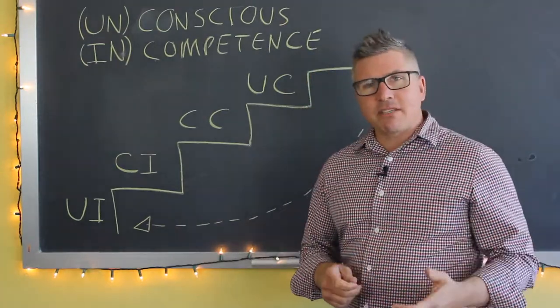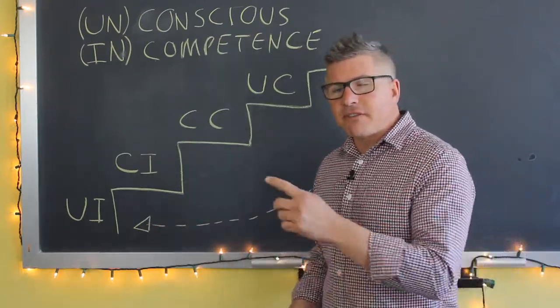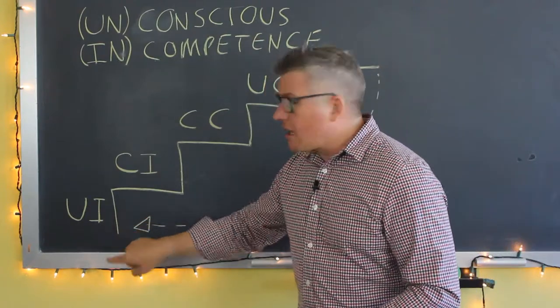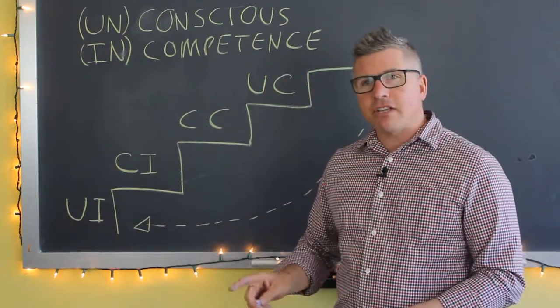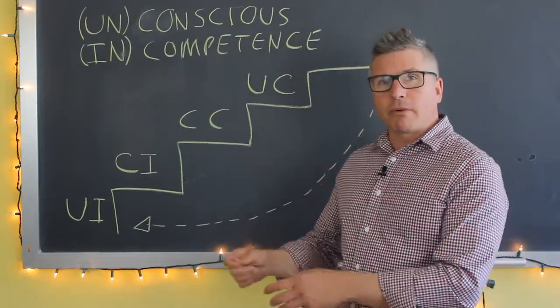Well, so we need to recognize that as business owners, we're going through these four stages all the time. And there's actually a fifth stage, which is where we go from unconscious competence down to unconscious incompetence again. And that usually happens when we try something that's related to but different to what we're really good at.